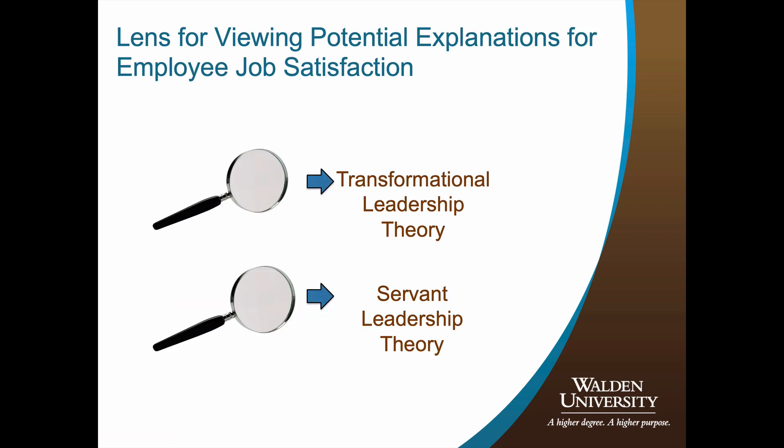Let's assume the problem or phenomenon is that of job satisfaction. It stands to reason there are a plethora of explanations that can be offered for employee job satisfaction. As the researcher, you have the choice of lens through which to view the problem. For example, you might hypothesize or rationalize, based on the literature, that transformational leadership characteristics offer a systematic view for job satisfaction — specifically, that a leader's transformational leadership characteristics influence or are related to job satisfaction. As such, your study would be grounded in transformational leadership theory.